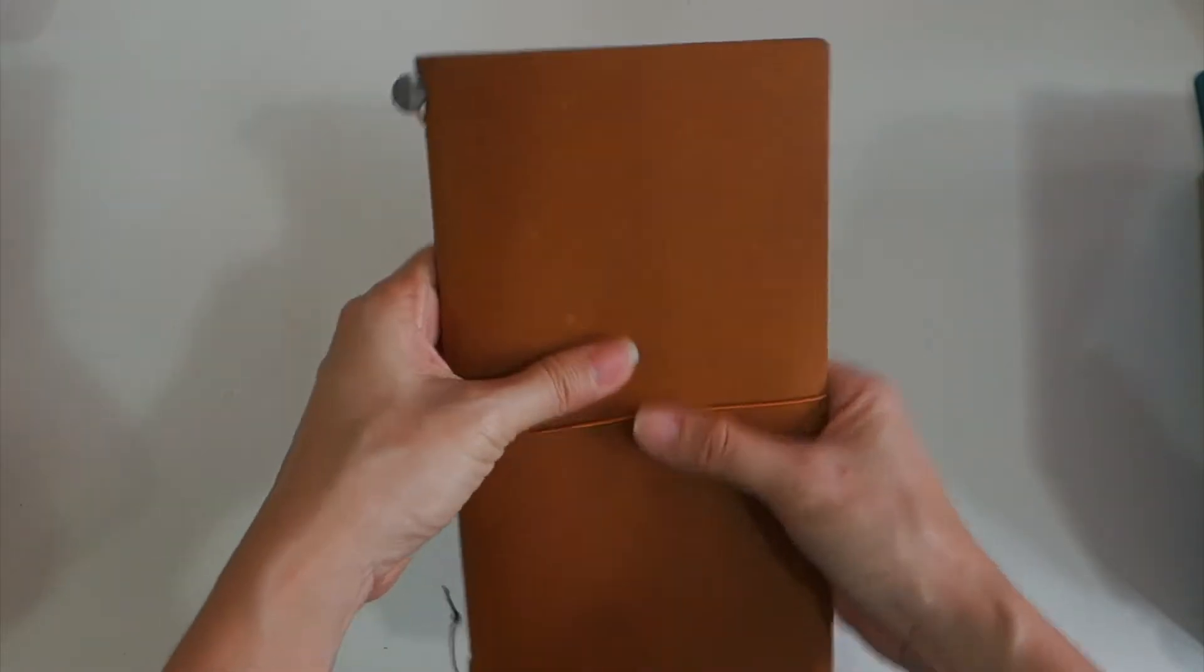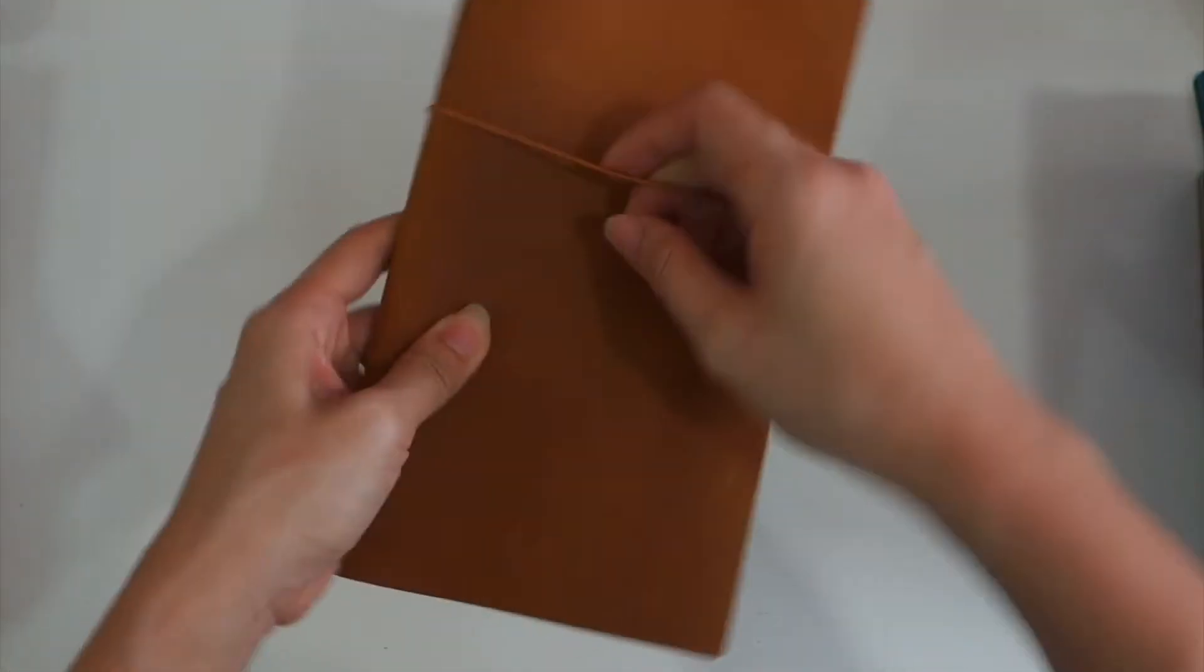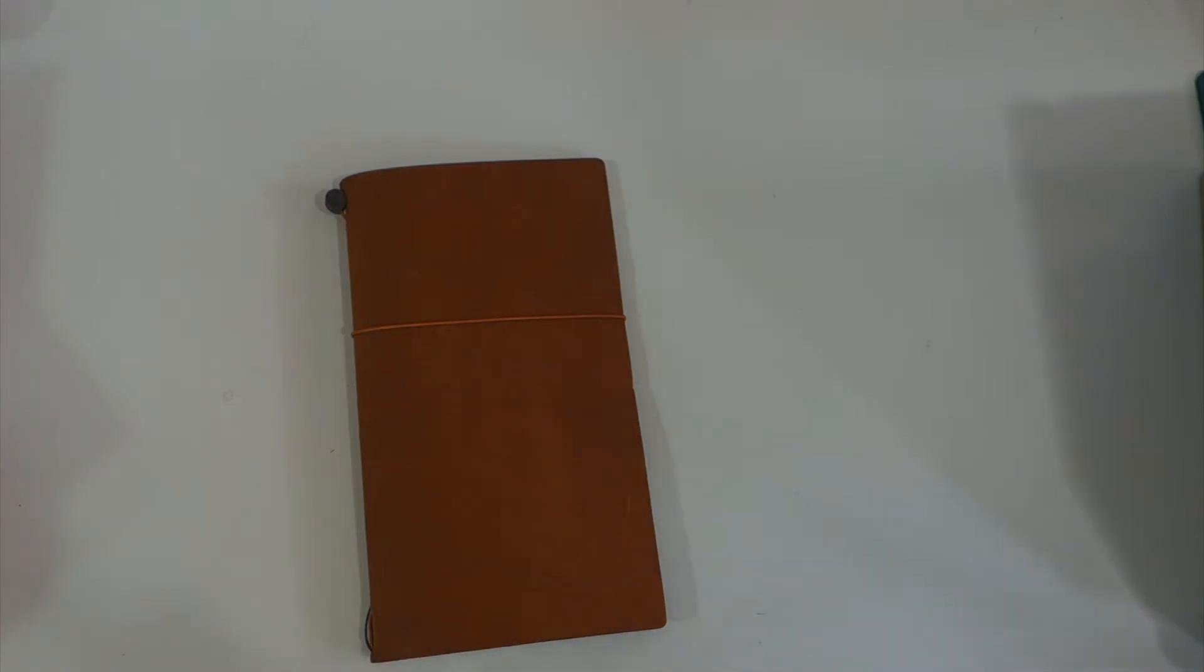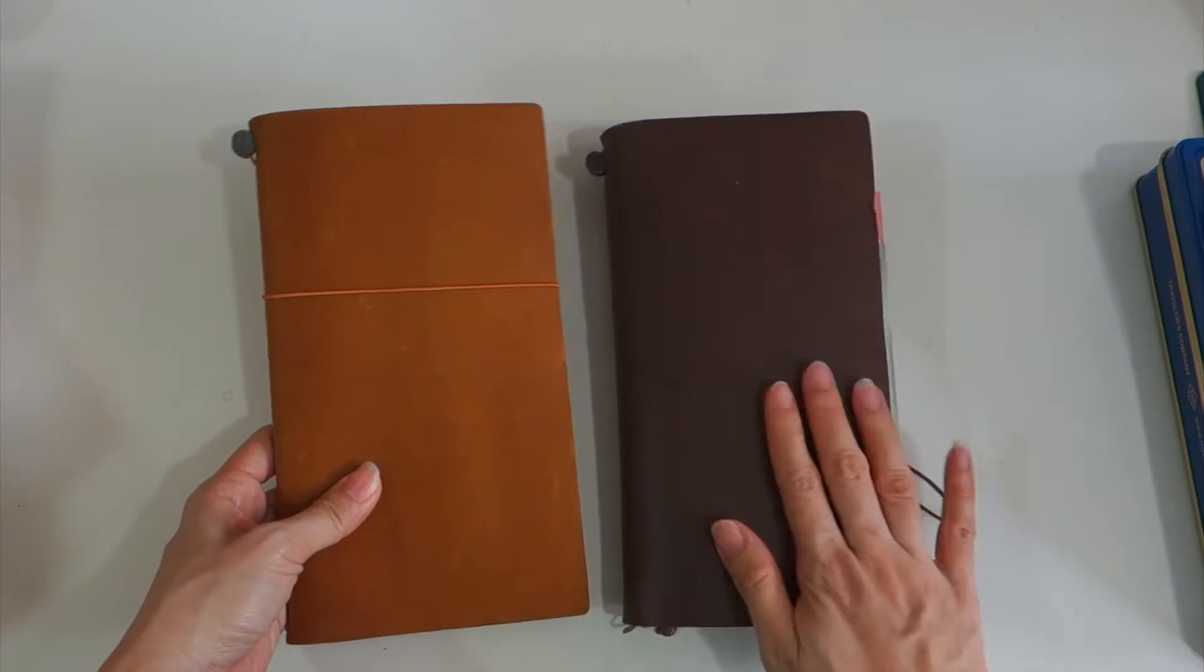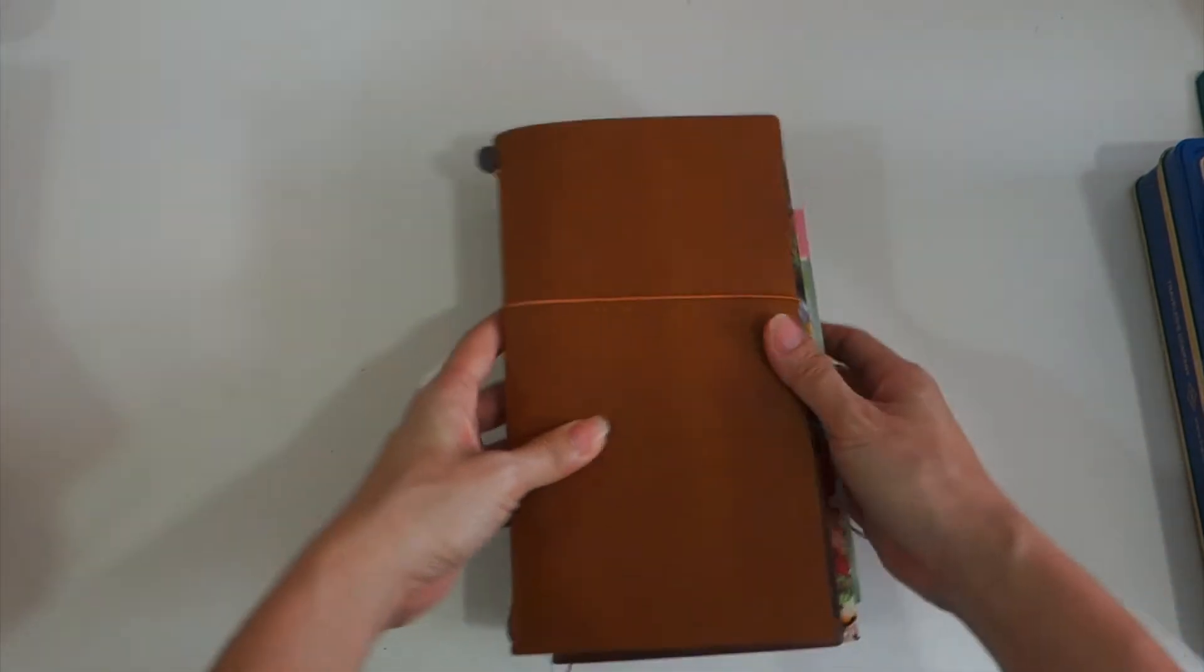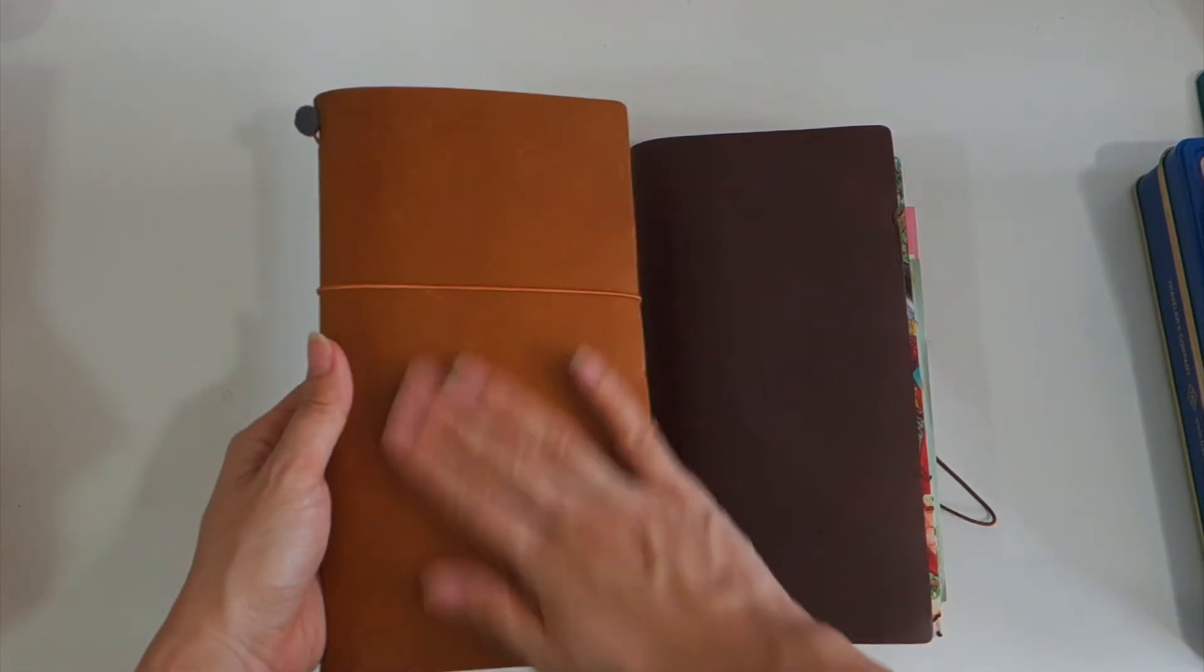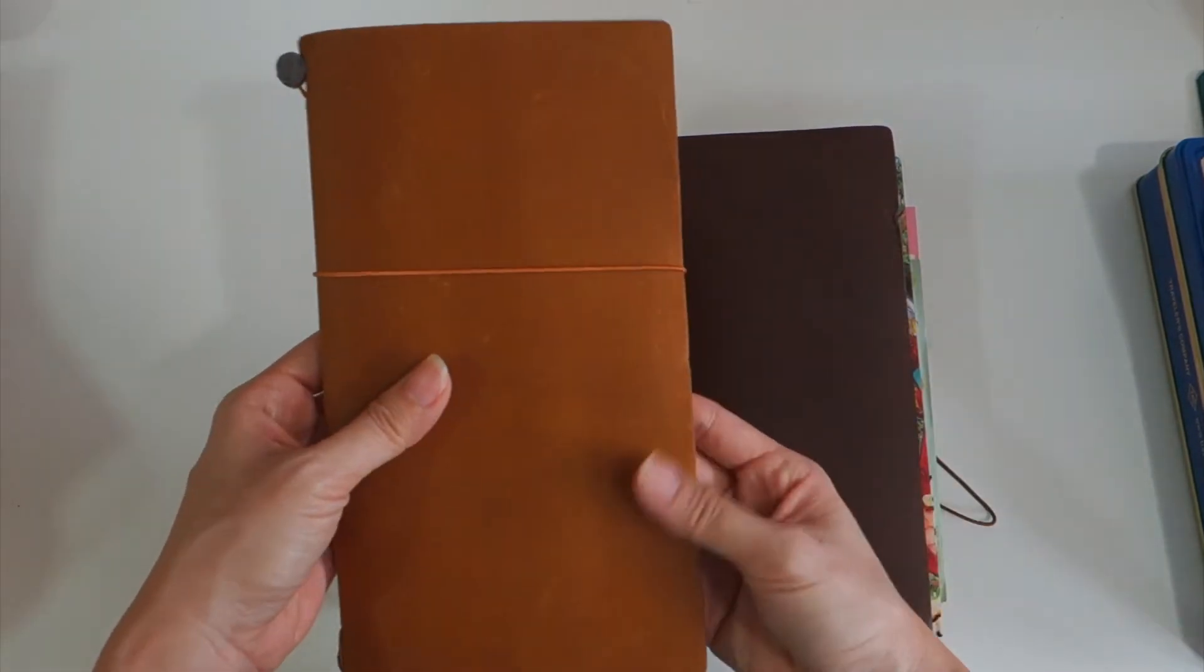I believe this is how it should look like. I'm planning to get the passport size one. So this is the camel color if compared to brown. This is my brown and this is the camel color. The size is the same, it's just that the texture is different. I'm not sure why.